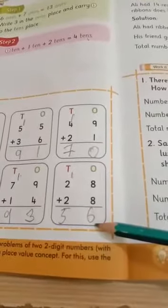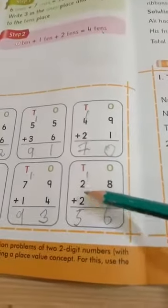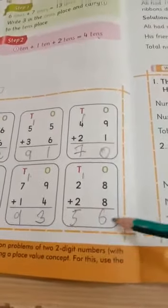8 plus 8, 16. 6 carry kia. 6 plus 1, 2 plus 1, 3. 3 plus 2, 5. 56.